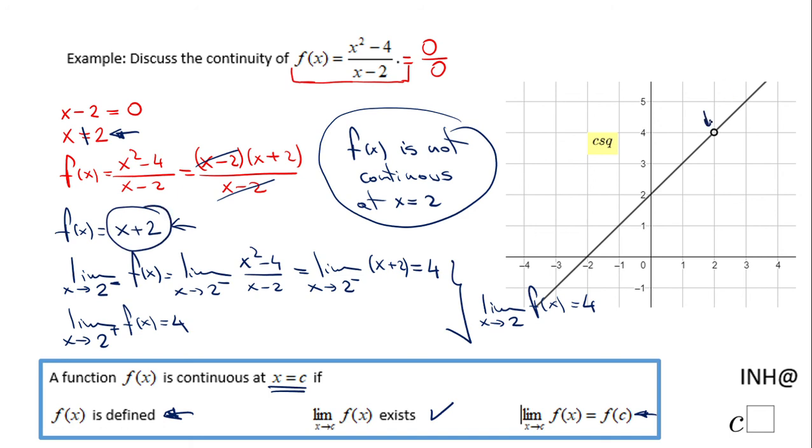Why? Because of this statement here: x cannot be 2. And like I said, the function is not continuous even though the limit does exist. The value of the function at 2 does not exist, so the function is not continuous at x equals 2.